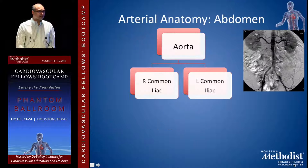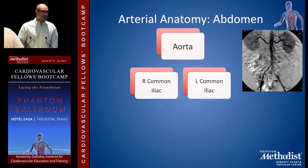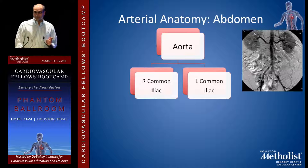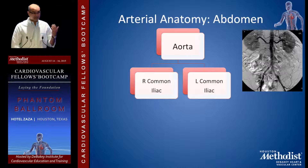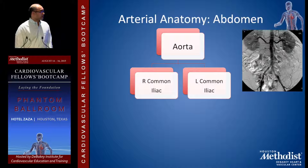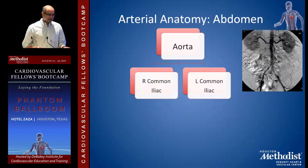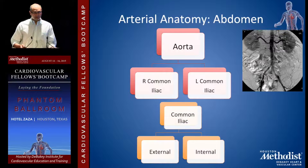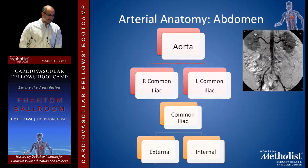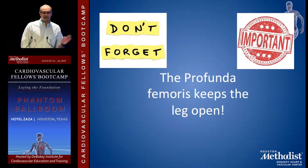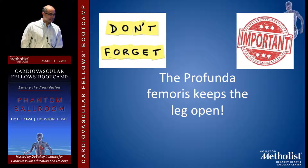Arterial anatomy for the lower extremity starts from the aorta. You have to remember that when you do non-invasive testing and you find lower extremity disease, you have to keep in mind there could be proximal disease as well. The aorta goes into right common and left common iliac. The common iliacs then bifurcate into external and internal iliac. Remember: the profunda keeps the leg open.